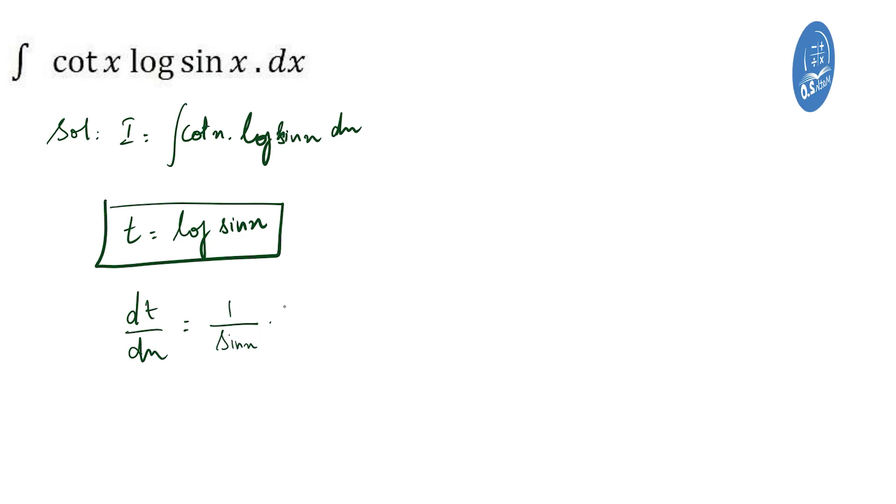Now, sin x will differentiate with respect to x. So, sin x differentiates to cos x. So, cos x by sin x is nothing but cot x. So, dt by dx equals cot x.